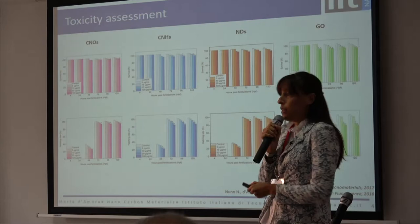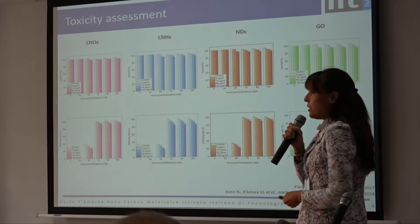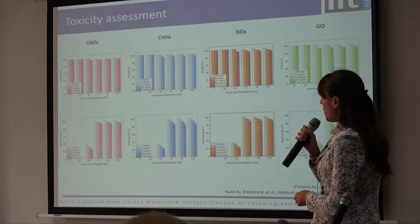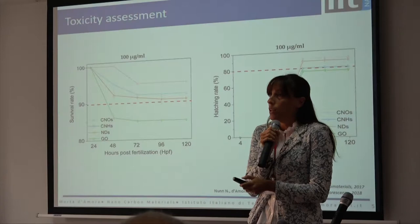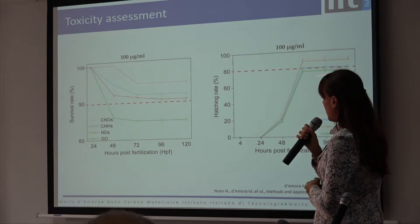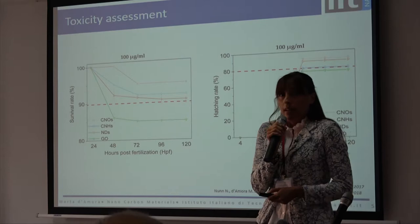In this temporal window, graphene oxide induces toxicity and the survival rate values are under 90%. A similar trend is visible also for the hatching rate corresponding to the chorion aperture. In accordance with normative law, to consider a nanomaterial as non-toxic, the survival rate and the hatching rate should be more than 90% and 80%, as indicated by the red line.